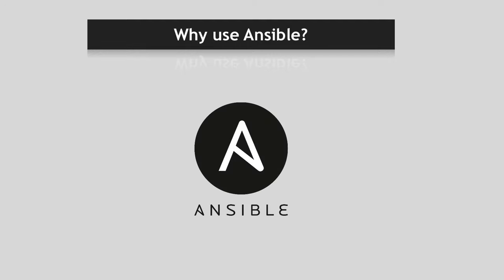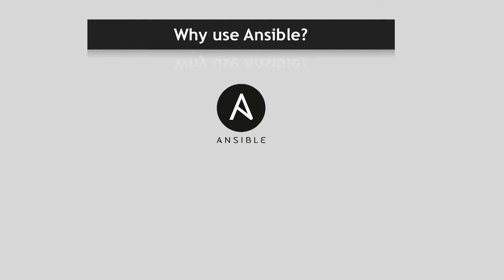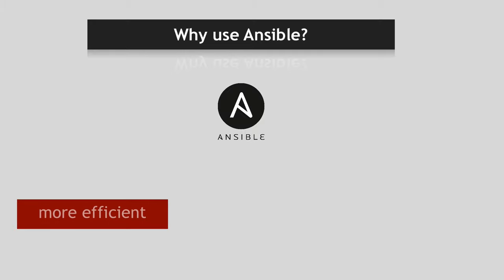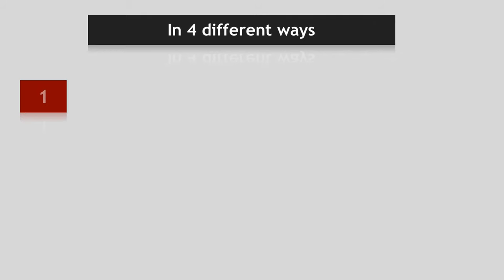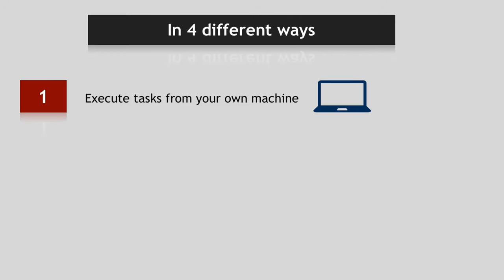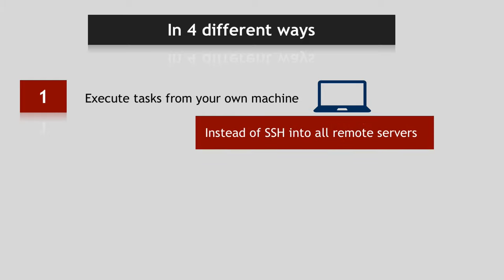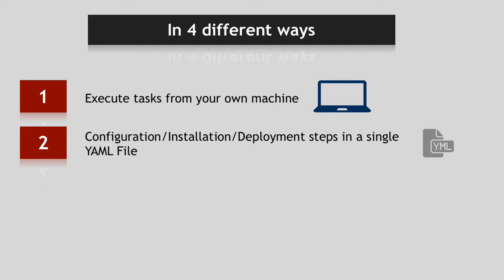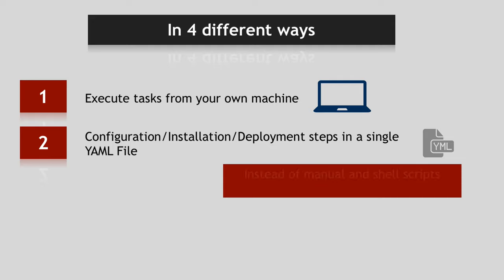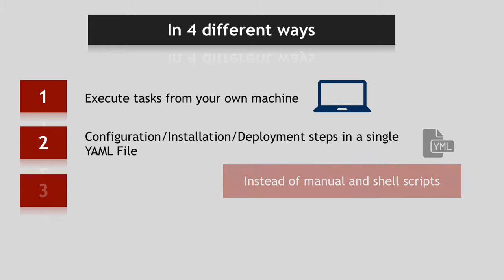Ansible comes in to make all these scenarios much more efficient and less time consuming in four different ways. First, you can execute all these tasks like updates and deployments on all the servers from your own machine remotely, instead of going into each server one by one. Second, you can do it by writing all the steps of configuring, installing, deploying in a single YAML file instead of doing it with manual steps or a combination of shell scripts and manual steps.